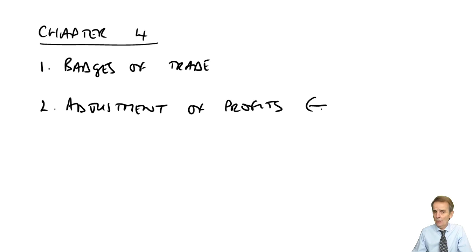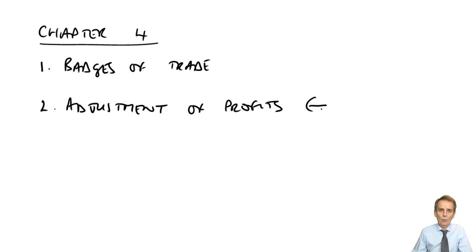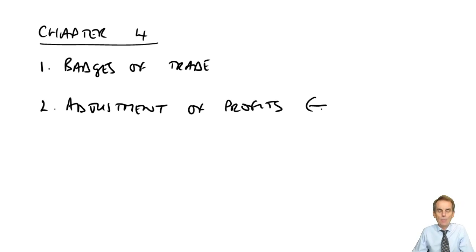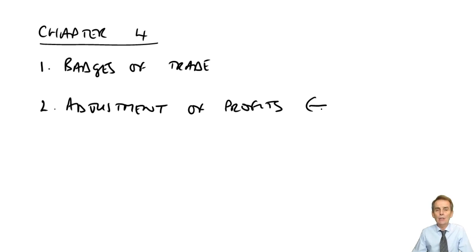Whether the type of Adjustment of Profits you'll be dealing with is, as we deal here within Chapter 4, dealing with an unincorporated trader — so we have a sole trader business, we have a partnership — we prepare our statement of profit or loss. And then for taxation purposes, we pick up the bottom line on that statement of profit or loss, the net profit as per the accounts, and then adjust it to make it acceptable for taxation purposes.